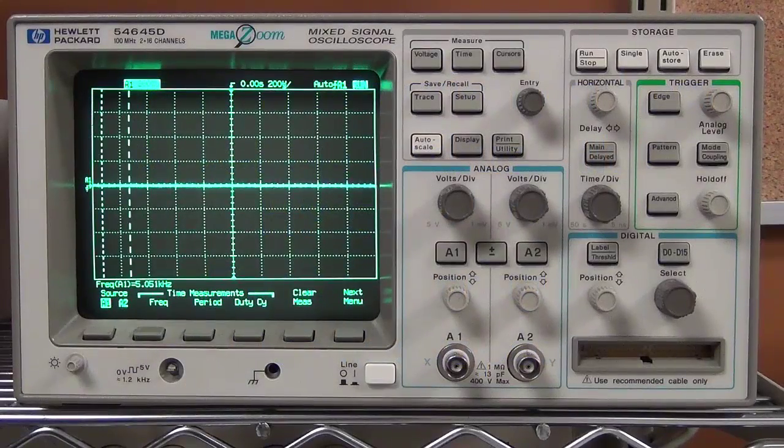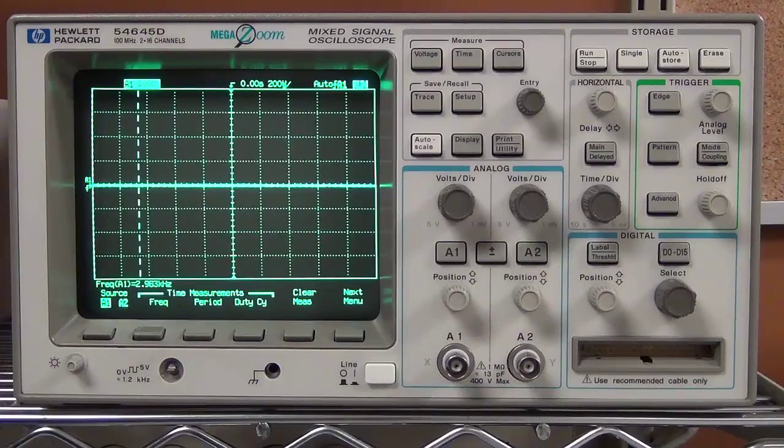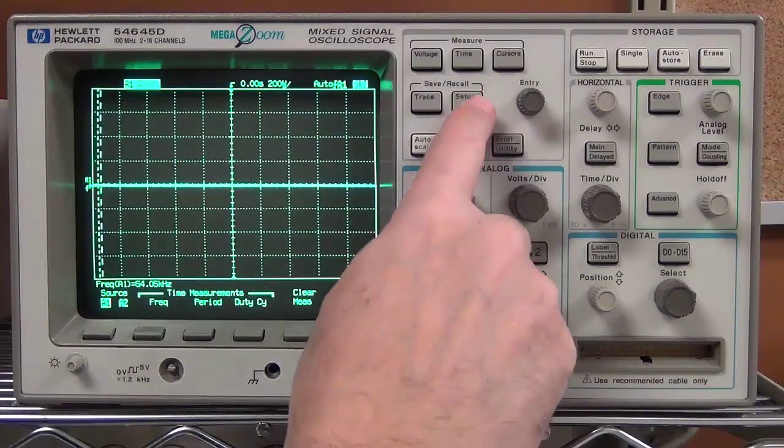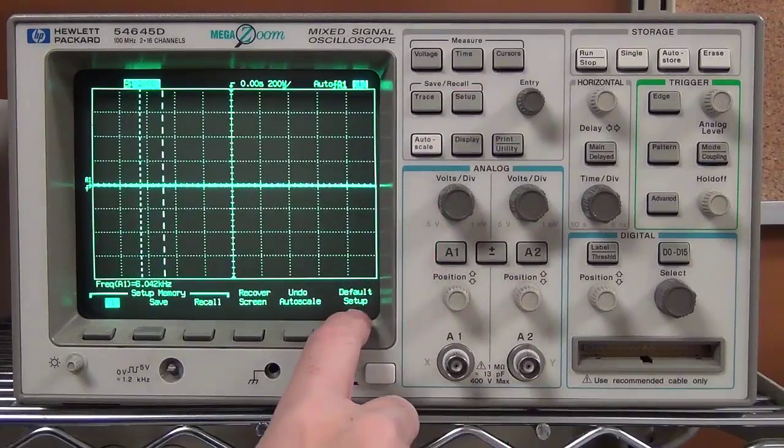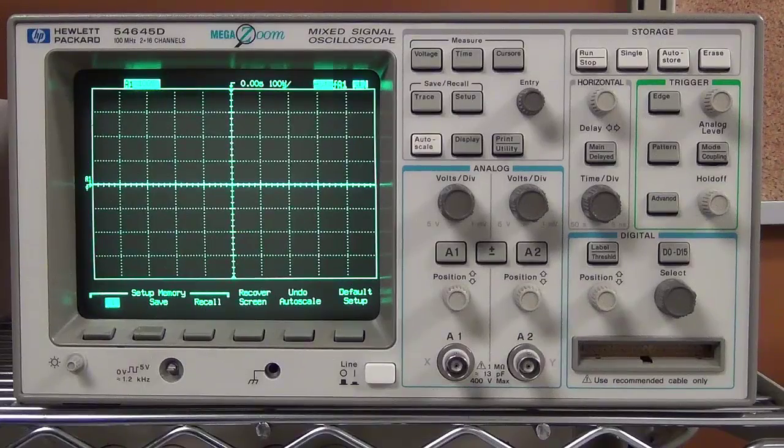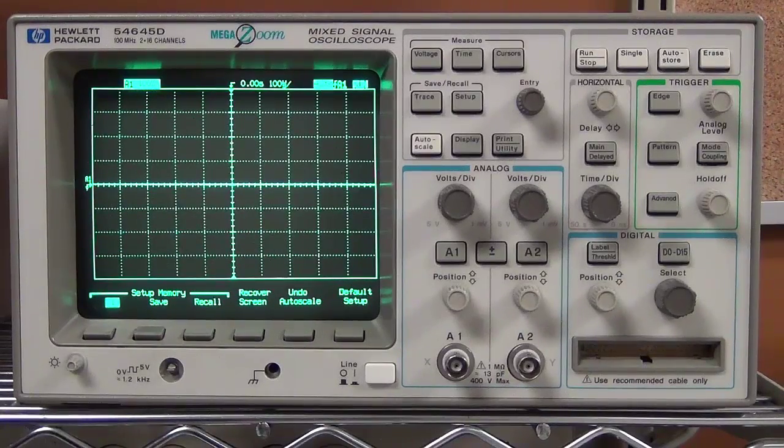I'm just going to take a quick look at setting up this digital oscilloscope. Since when these things are turned off, they retain a lot of the settings and you might not know what the scope was being used for, I always start with Setup and Default Setup. If your scope is different, it might have a different pattern of keystrokes to set that up, but you should be able to reset the scope to its initial configuration.